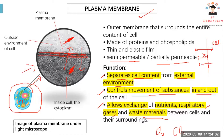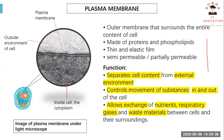For example, water can go in, but fats cannot go in. Glucose can go in, but waste products cannot enter the cell. This is what is meant by semi-permeable, or partially permeable.